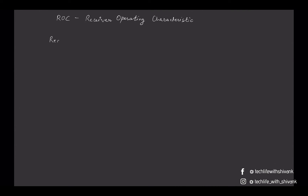Recall is also known as TPR, that is True Positive Rate, which means out of the total positives, at what rate we are predicting those correctly. So it's True Positive upon True Positive plus False Negative — that is, predicted positives out of actual total positives.